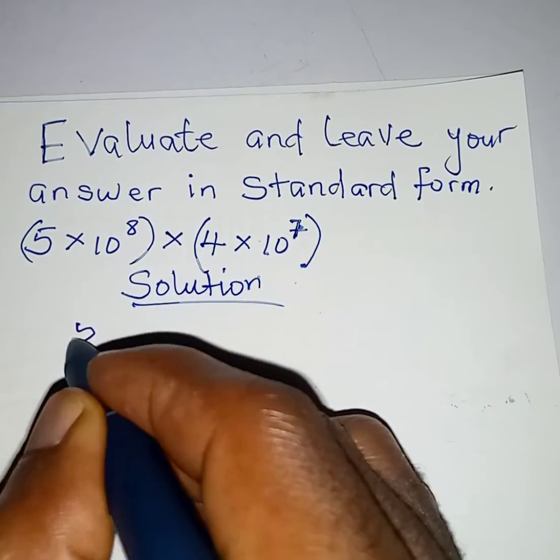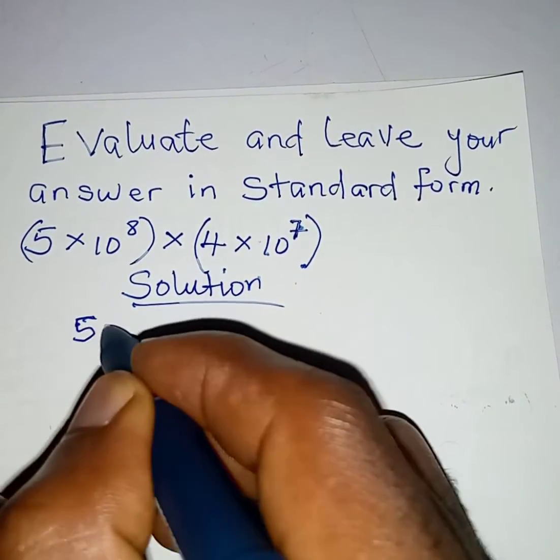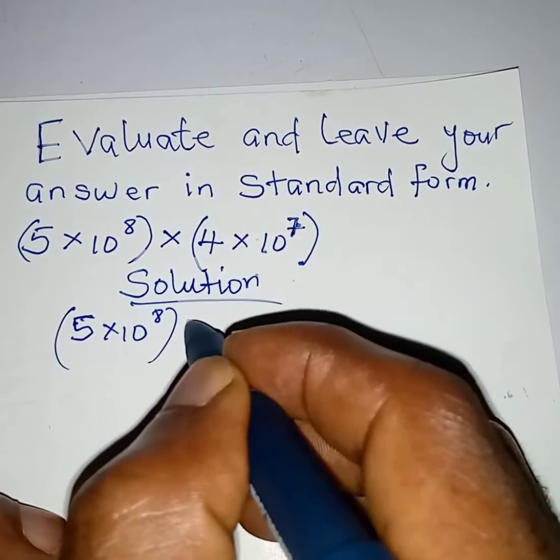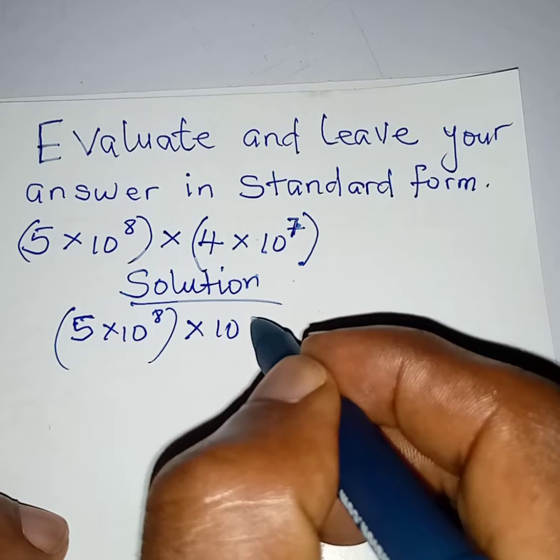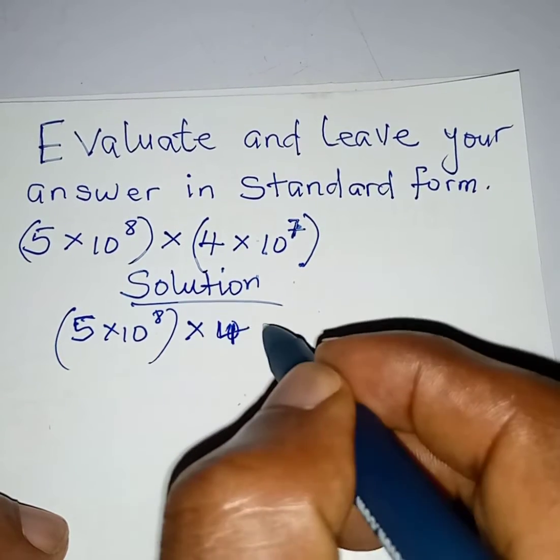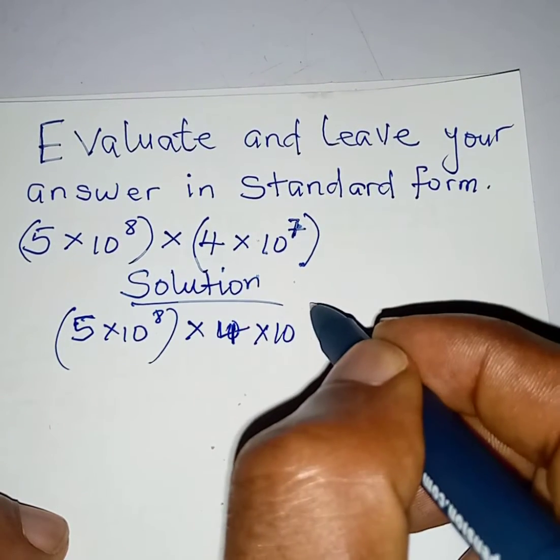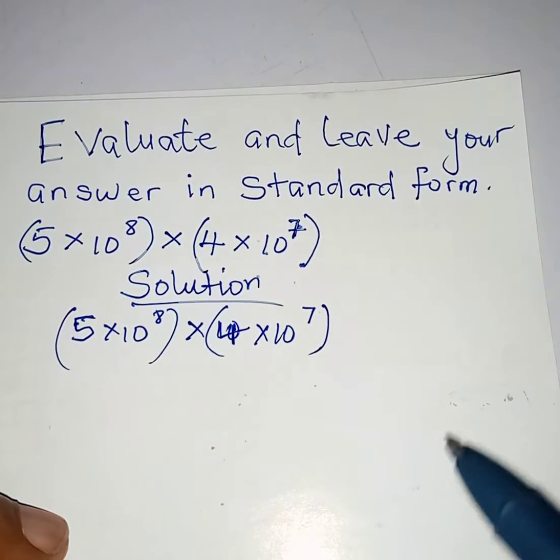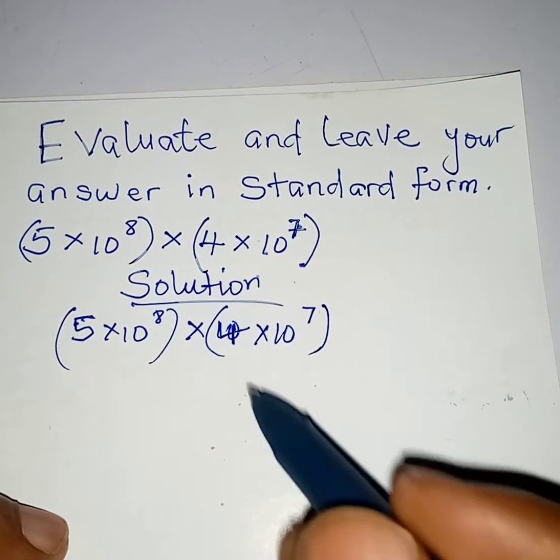Okay, so we have 5 times 10 raised to the power of 8 multiply by 4 times 10 raised to the power of 7. This is in brackets. Remember we have to leave an answer in standard form.